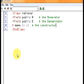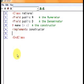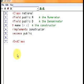So we'll create a function called make. It takes two arguments, small n and small d. And we have to tell it that it's a constructor, so we put the sentence implements constructor. And because it's also a public method, we have to put this access public in there.